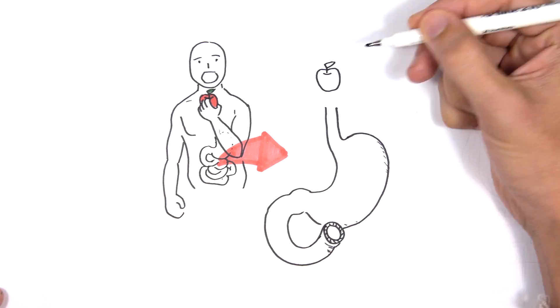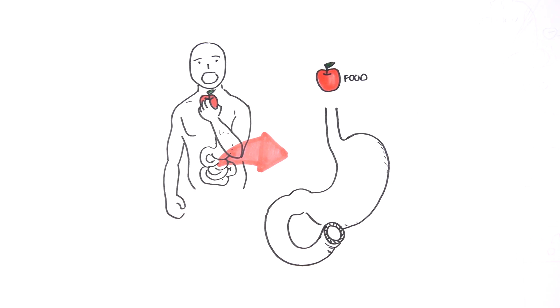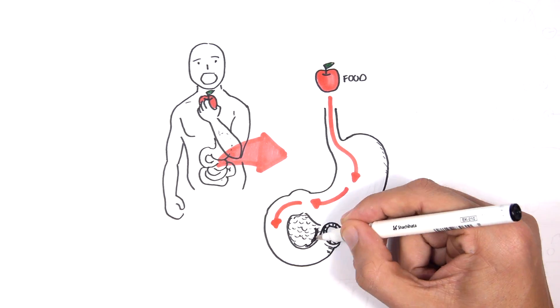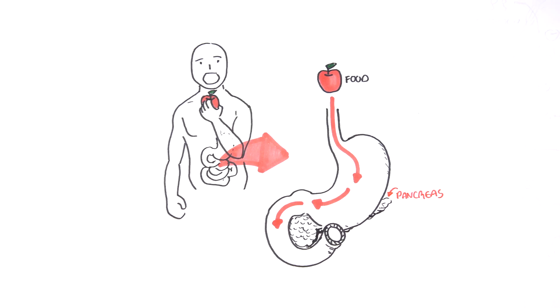Here, the bite of the apple travels through the stomach and into the small intestine. Right next to the small intestine and stomach, we can find the pancreas.